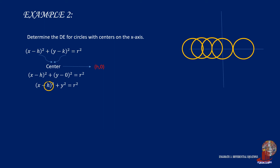Check the number of constants in the equation. We have h and r, which allows us to derive the equation twice. The first derivation gives 2 times x minus h times 1 plus 2y y-prime is equal to 0. Dividing the whole function by 2 simplifies it to x minus h plus y y-prime is equal to 0.